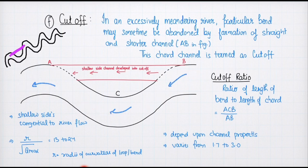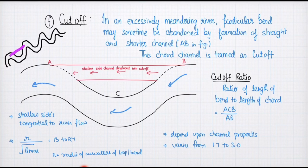The cutoff depends upon the channel properties — more silting and scouring processes mean greater chances of meander formation in a short duration and higher probability of cutoff. The cutoff ratio normally varies from 1.7 to 3 and is tangential to the flow of the river. As a general point, the radius of the loop formed divided by the maximum discharge has a value of 30 to 24. This concludes the discussion on the behavior of the river.